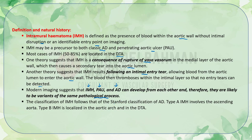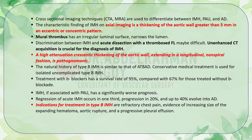The classification of IMH follows the Stanford classification of aortic dissection: type A IMH involves the ascending aorta, and type B IMH is localized in the aortic arch and descending thoracic aorta. Cross-sectional imaging techniques — CT angiography or MRA — are used to differentiate between intramural hematoma, penetrating aortic ulcer, and aortic dissection. The characteristic finding of IMH on axial imaging is thickening of the aortic wall greater than 5 mm in an eccentric or concentric pattern.